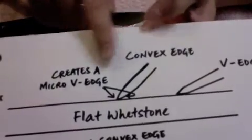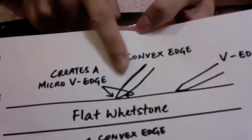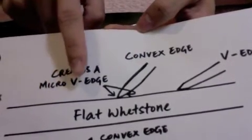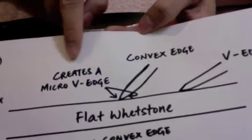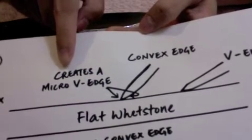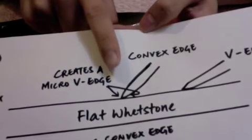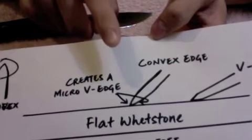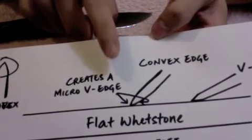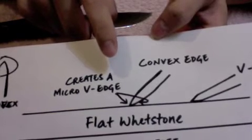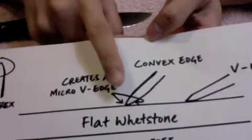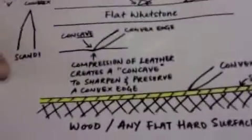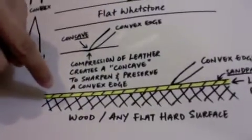So, by using, by putting the convex edge on the wetstone to sharpen, what you would end up doing is creating a micro V-edge on your convex edge, meaning you have lost your convex edge, but you can always get it back again by something called reprofiling your edge. So, if you want to preserve and sharpen, and at the same time sharpen the convex edge, you will have to do something, you have to sharpen it differently.